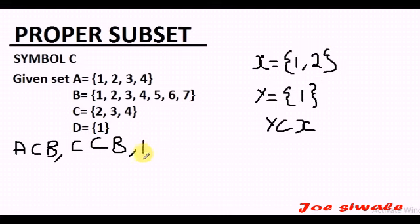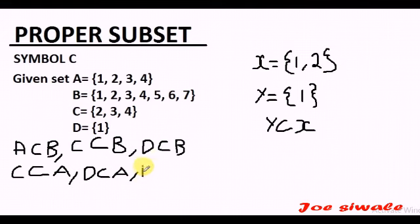So we can say A is a proper subset of B because A has all its elements contained in B. C is a proper subset of B, D is also a proper subset of B. We can also say C is a proper subset of A, D is also a proper subset of A, and D is a proper subset of C.